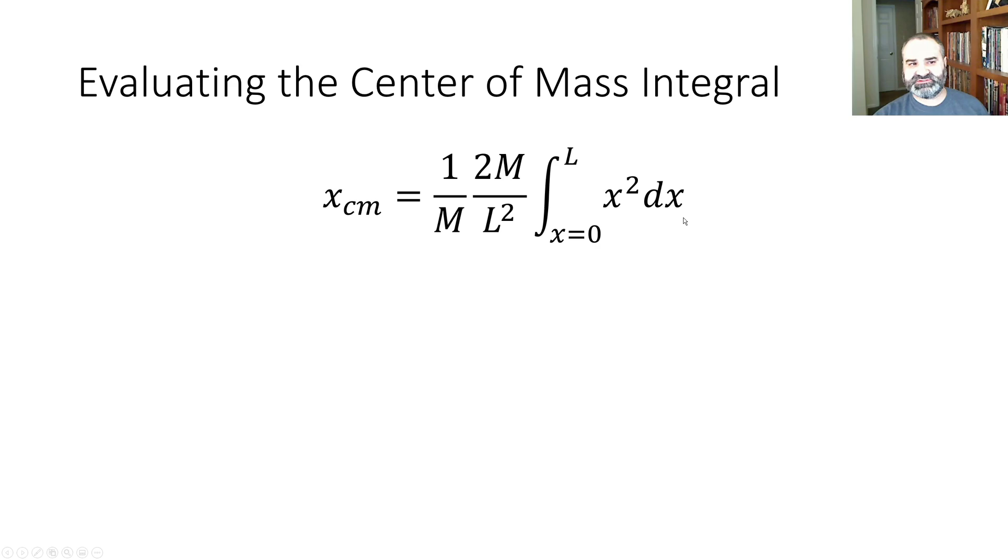Integrate, raise the power, divide by the new power. And we find x center of mass is 2 over L squared, that's what was out in front, times x cubed over 3. Evaluate at the endpoints. When we evaluate that, we find that the center of mass is 2 thirds of the way along the bar. And that's the end of the first lesson on center of mass.